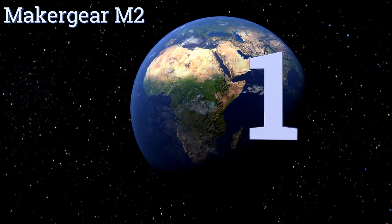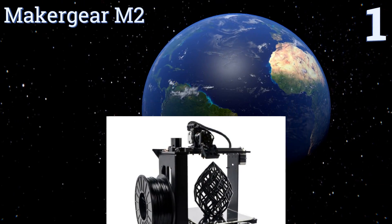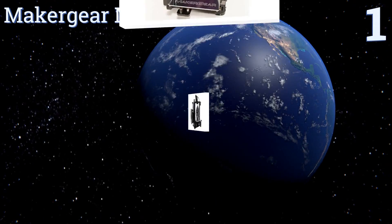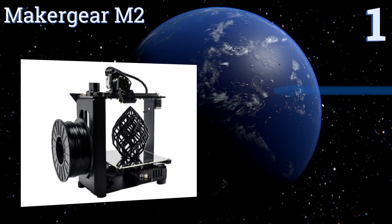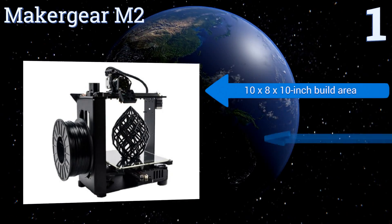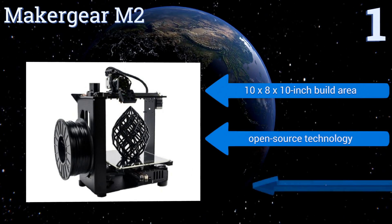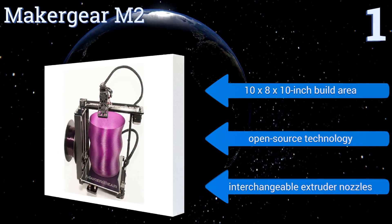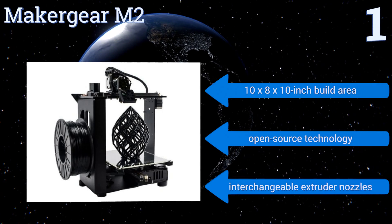And taking the top spot on our list, the delightfully hackable MakerGear M2 is a workhorse of a machine beloved by makers for its exceptional precision, reliability, and ease of maintenance. Its solid metal chassis with heated build platform provides ample room for creating and replicating your designs. It boasts a 10 by 8 by 10 inch build area, open source technology, and interchangeable extruder nozzles.